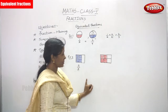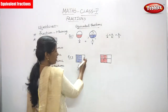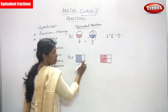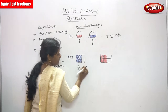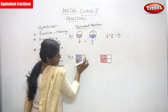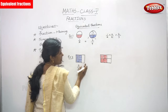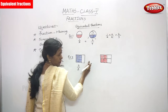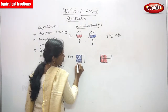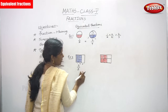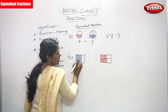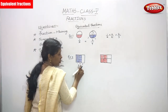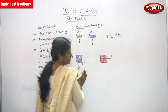Next diagram. I draw a rectangle and I cut it into 3 equal parts: first part, second part, third part. After that I shaded only 2 portions. Overall parts is 3 and the shaded portion is 2, so 2 by 3 is the fraction for this diagram.